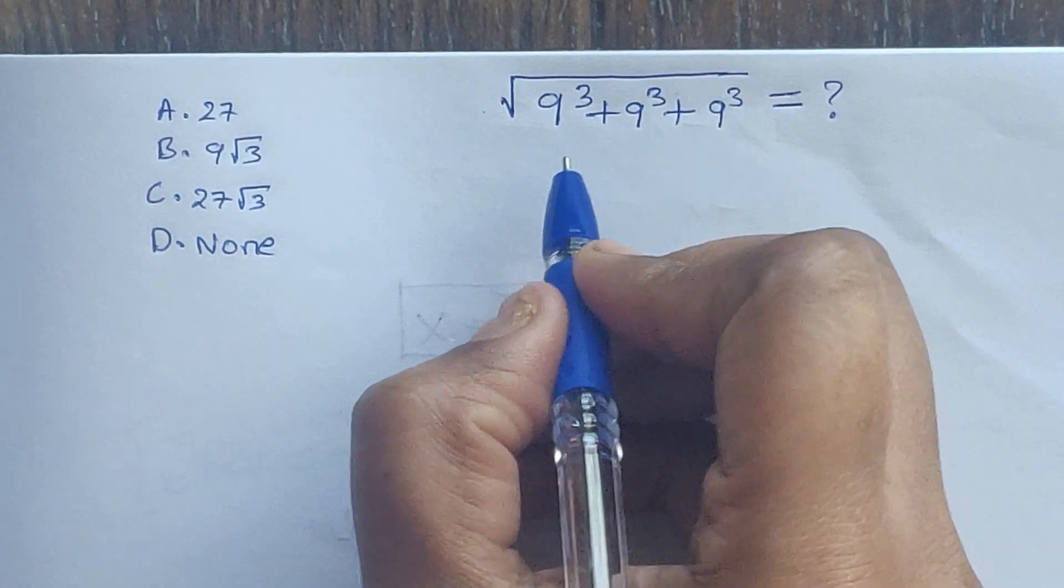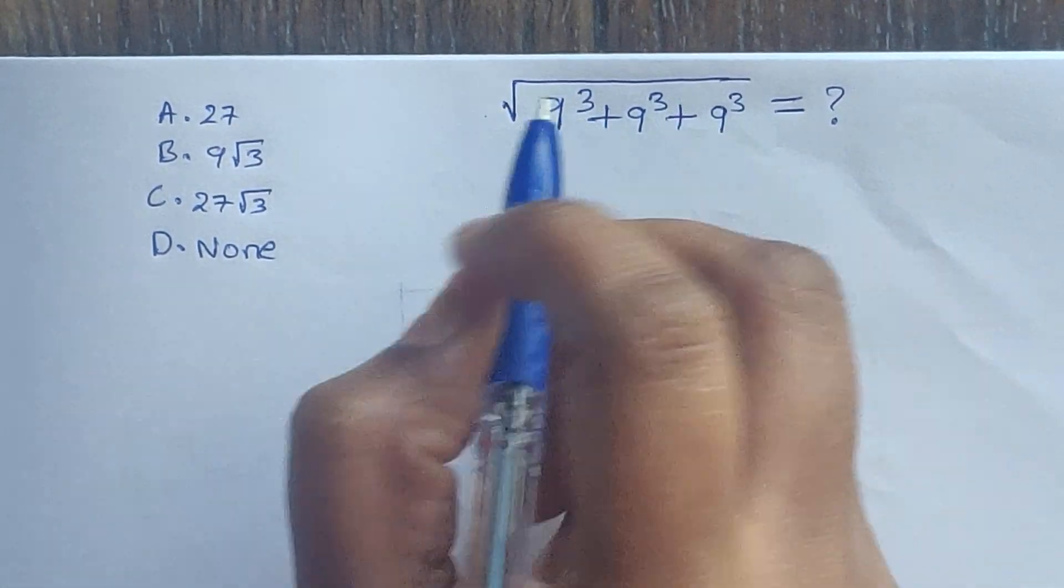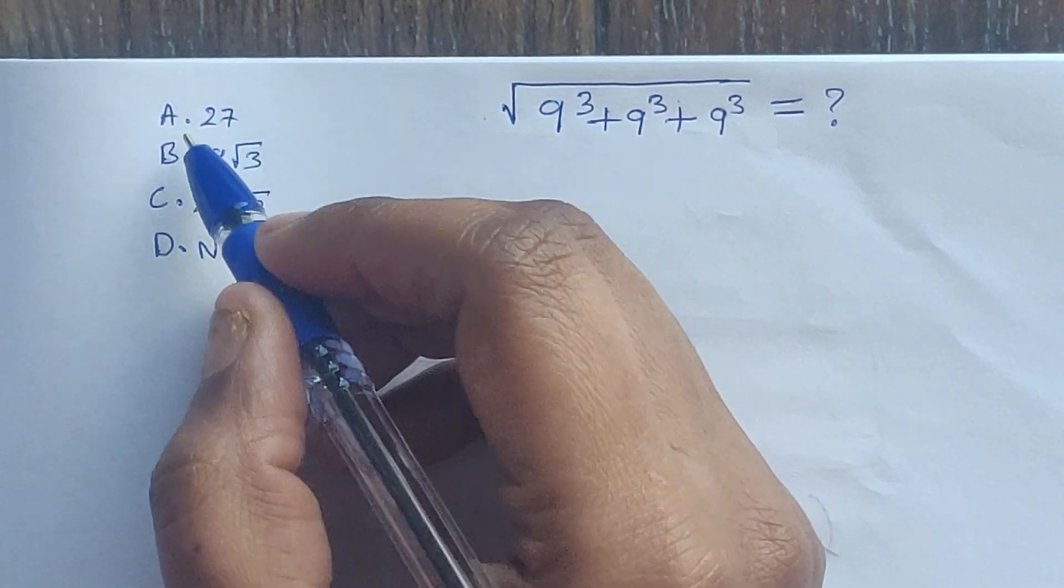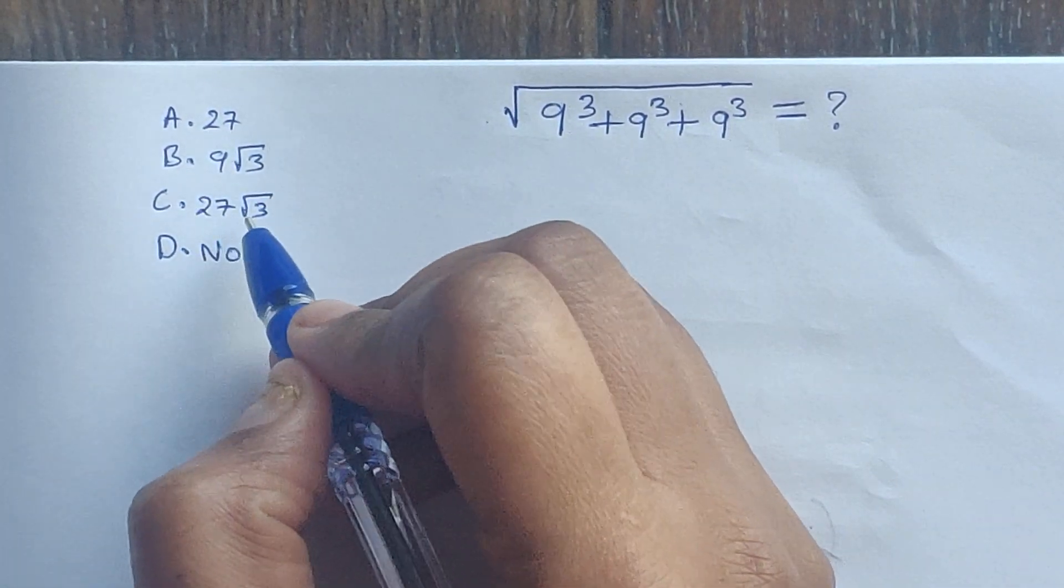Hello everyone, welcome back to my channel. Here we have one problem: square root of 9 cube plus 9 cube plus 9 cube. Here we have four options: A. 27, B. 9 square root of 3, C. 27 square root of 3, D. none. So let's see which option is correct.